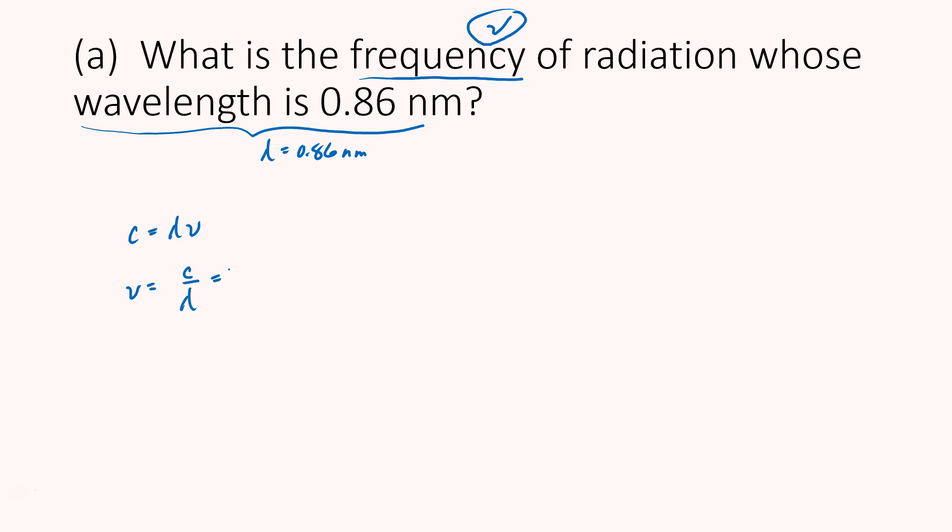Now C is a constant, that's the speed of light, it will always be given to you. It's 3.00 times 10 to the 8th meters per second. And now we have to divide by the wavelength. And again, the wavelength is given to us, but it has the units of nanometers. If we want to use it in this equation, we probably should convert nanometers into meters. So 0.86 nanometers.